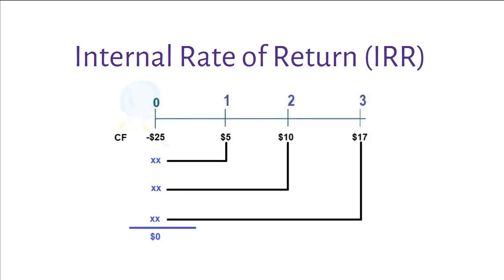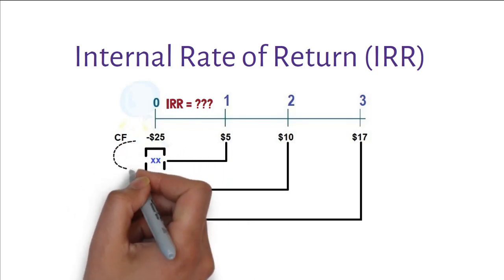IRR is a project selection technique that indicates a discount rate that forces a project's NPV to equal zero. In other words, it is the discount rate that makes the present value of all future cash flows equal to the project's initial outlay.